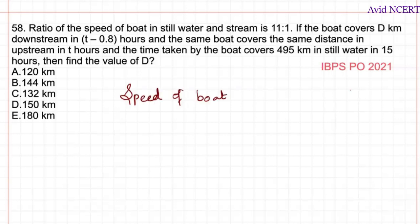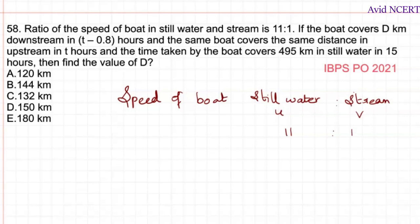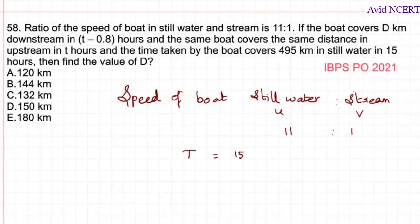The speed of the boat in still water (u) to stream (v) is in the ratio 11 to 1. The boat covers d kilometers downstream in t minus 0.8 hours, and for upstream it takes t hours. The time taken by the boat is 15 hours and the distance covered is 495 kilometers.